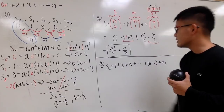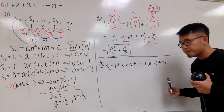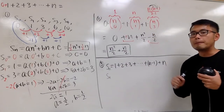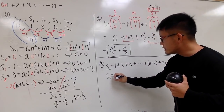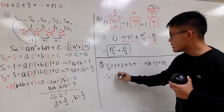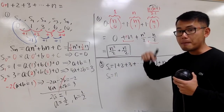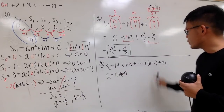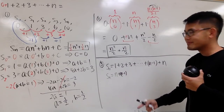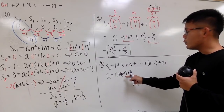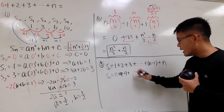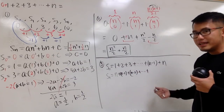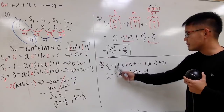Here is the deal: I'm going to rewrite this backwards. Sn is the same as starting from n, then n minus 1, then n minus 2, and so on, ending with plus 2 plus 1. I just reverse the order.